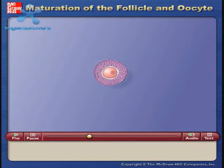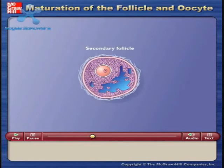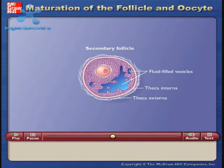The structure is called a secondary follicle when fluid-filled vesicles develop among the granulosa cells and a well-developed capsule or theca becomes apparent around the granulosa cells. The theca possesses internal and external layers.